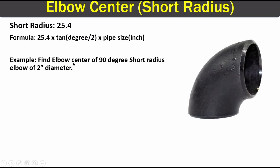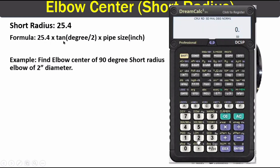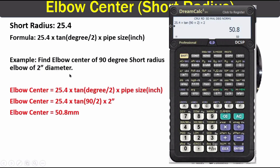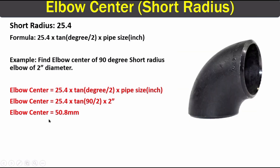Now let's find the elbow center of this elbow. We have a 90 degree short radius elbow with a diameter of 2 inches. Applying the formula: 25.4 multiplied by 10, into 90 divided by 2, multiplied by 2 inches. We get the answer as 50.8 millimeters. That's how you can easily find out the elbow center of a short radius elbow.